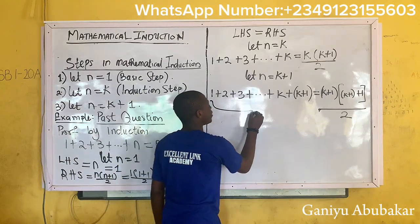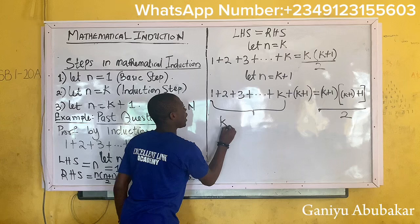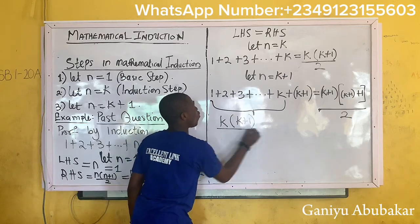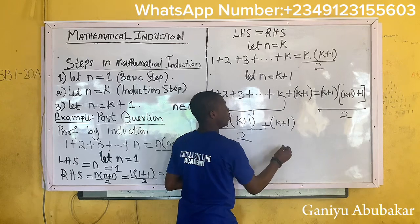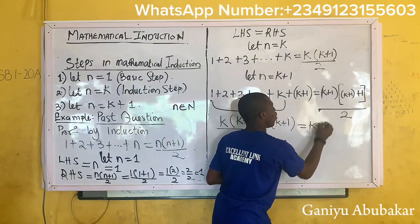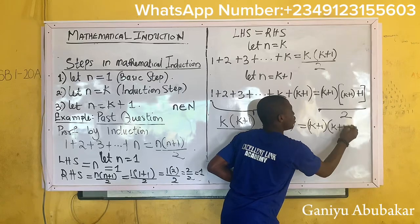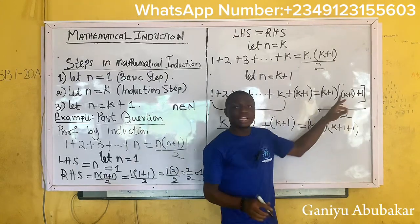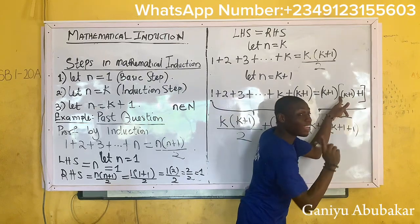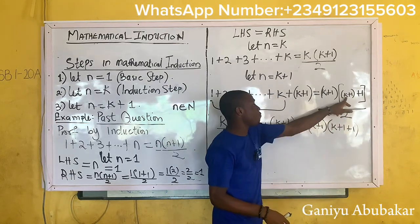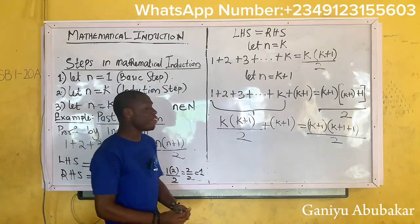From this point down to this point, everything here becomes k into k plus one over two — that's the induction hypothesis part — plus k plus one, equal to k plus one into k plus one plus one over two. Since there's a three here, open the bracket: I'll have k plus one, and plus one over two.